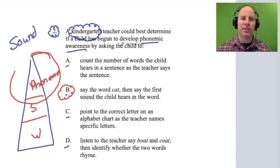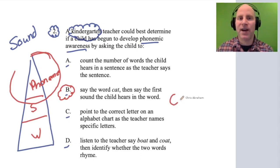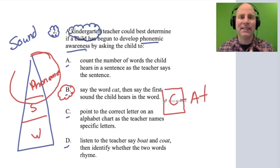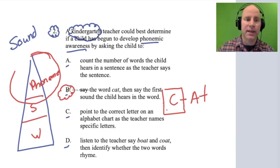The teacher asks the student to say the word cat, and then say the first sound the child hears in the word. Now it's the child saying the word cat and then identifying that the first sound is /c/. Here the child is doing an activity where they're identifying a distinct phoneme in the word cat. This activity would be promoting phonemic awareness. The answer is B.